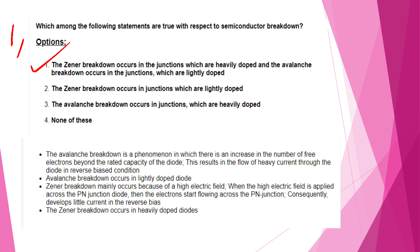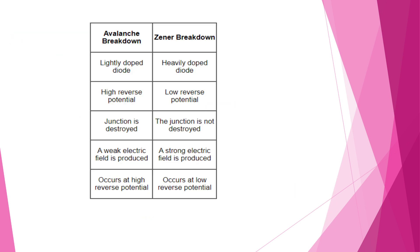Zener breakdown occurs because of a high electric field. We apply a p-n junction across a high electric field, and current flows in the p-n junction. We develop a little current in reverse bias. Zener breakdown occurs in heavily-doped diodes, while avalanche breakdown occurs in lightly-doped diodes. In avalanche breakdown there is high reverse potential; in Zener breakdown there is low reverse potential. In avalanche breakdown it is a weak electric field, and in Zener it is a strong electric field.